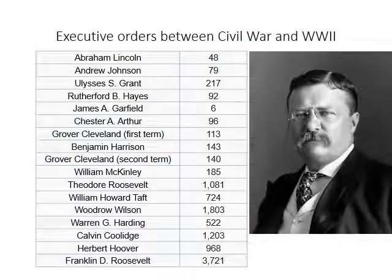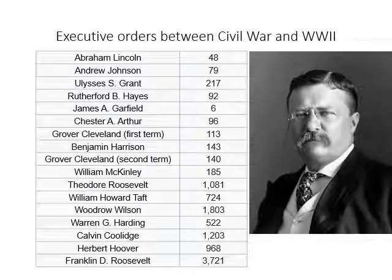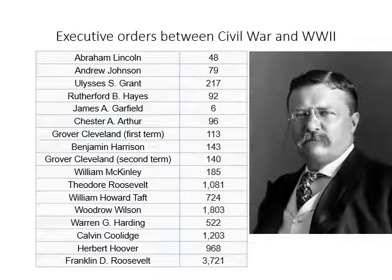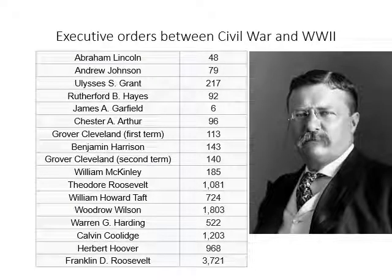Between the Civil War and World War II, the person who issued the most executive orders was Franklin D. Roosevelt with 3,721. The person pictured here is Theodore Roosevelt, his distant cousin. Theodore Roosevelt issued 1,081 executive orders, which was the largest number at that time.